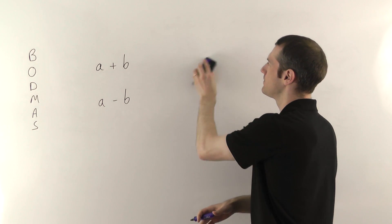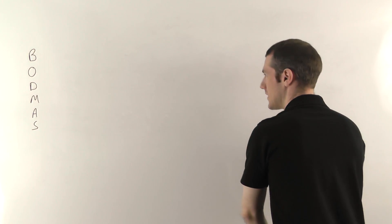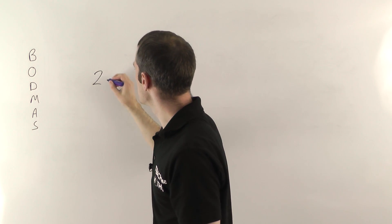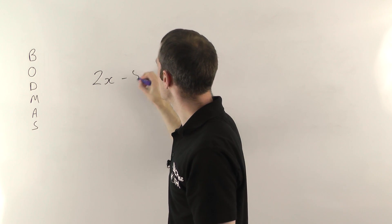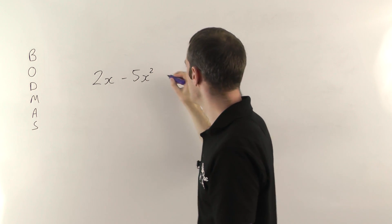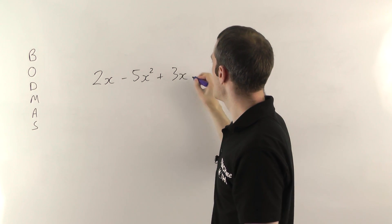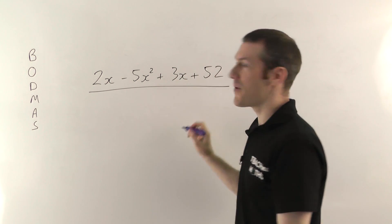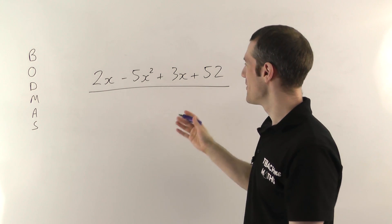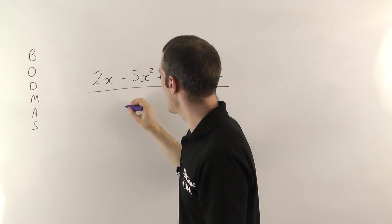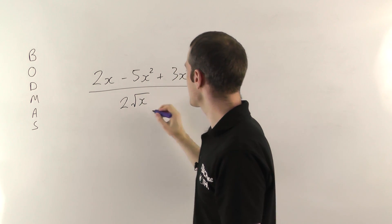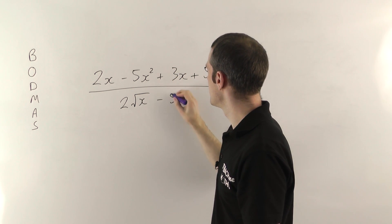Let me give you a bit of a crazy example to start with. So if we have 2x minus 5x squared plus 3x plus 52 on the top of a massive fraction, and on the bottom of the fraction, we'll have 2 times the square root of x minus 50.